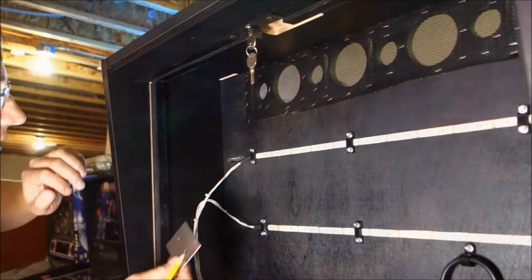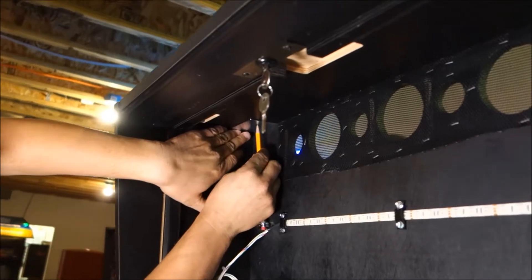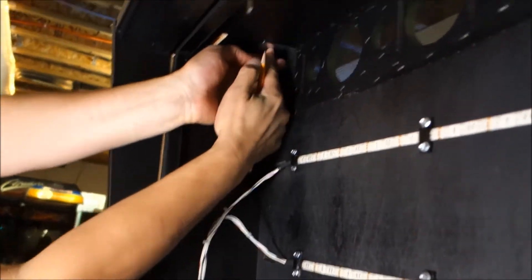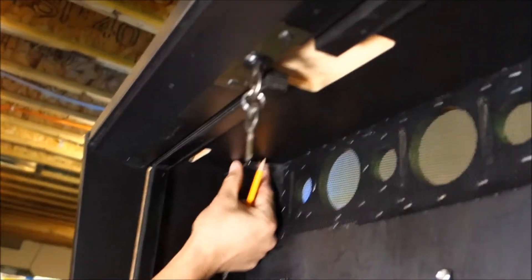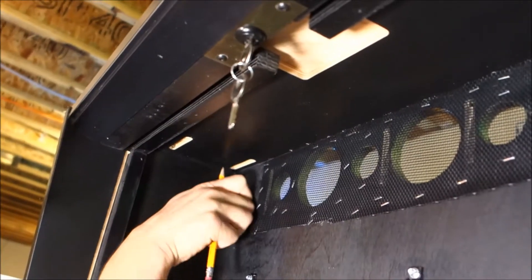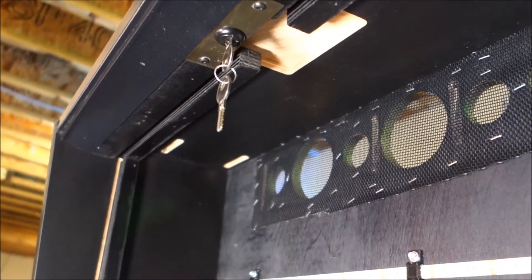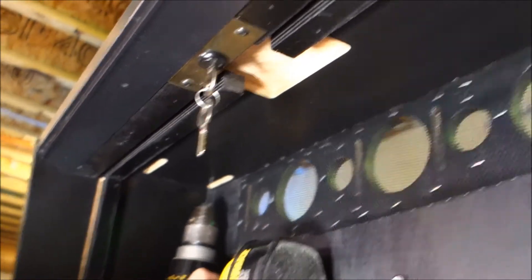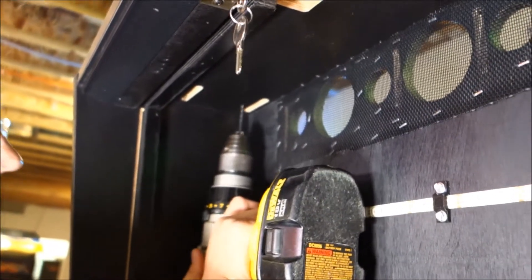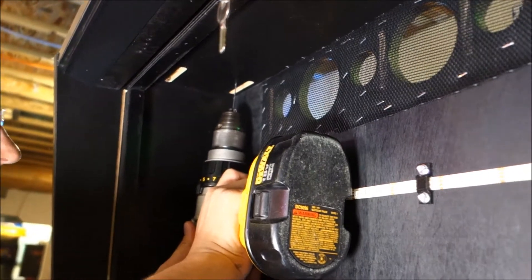Alright, first I'm going to mark where I want the holes for the knocker plate. I have a mark in each hole and I'm going to just drill a pilot hole. Of course, I want to be careful not to go through the cabinet, just enough so that the screw will grab into something.